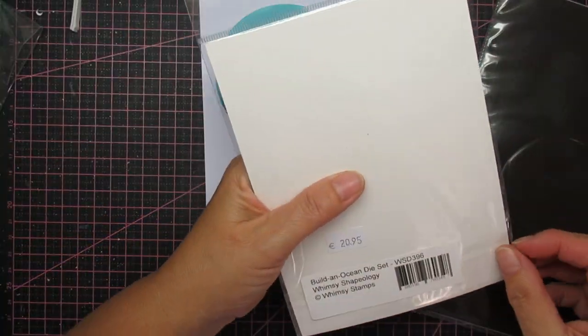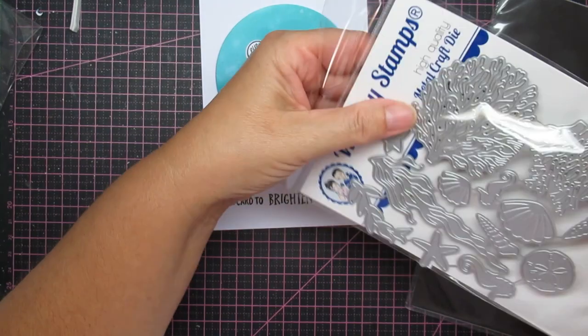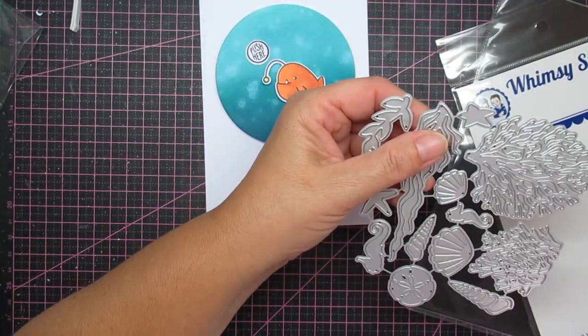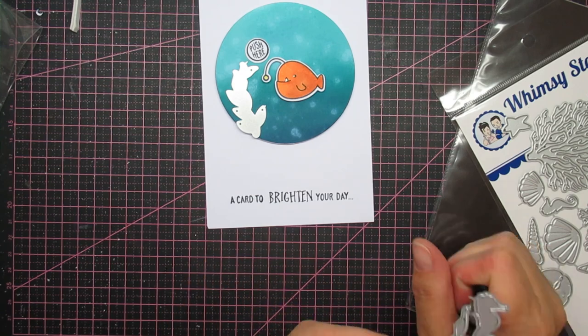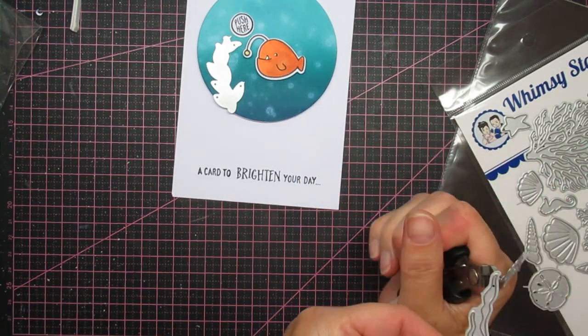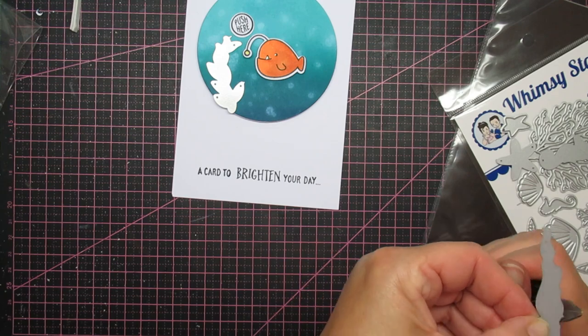And yeah, these are the die cuts, Ocean Builder die sets from Whimsy, 20.99 euros. Of course, I bought everything myself. In case you're wondering. I'm not sponsored. But yeah, I like to show you stuff.